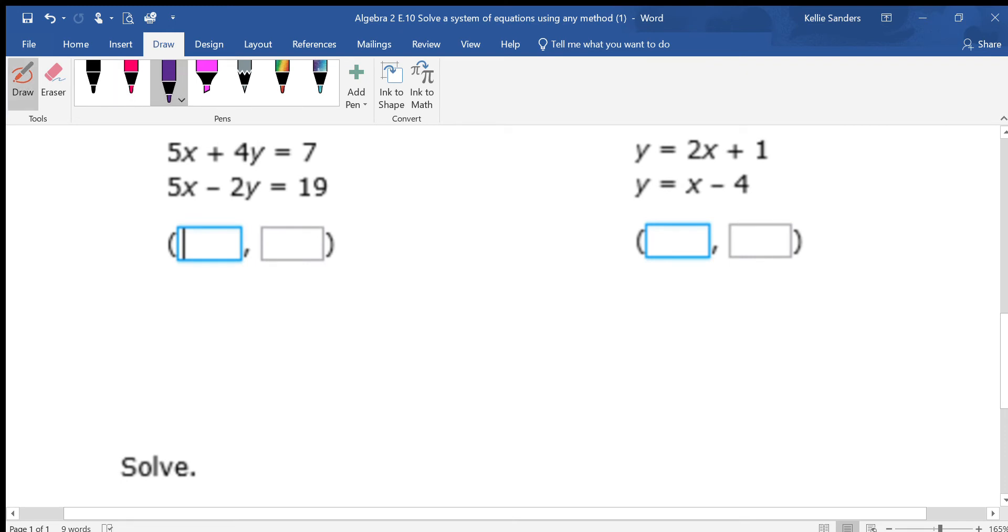And this one, I am going to use elimination. Basically, the reason I'm using elimination is because the x's and the y's are stacked on top of each other on one side of the equal sign.